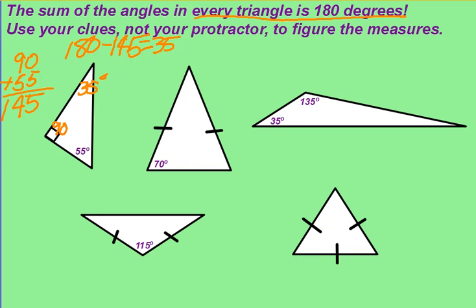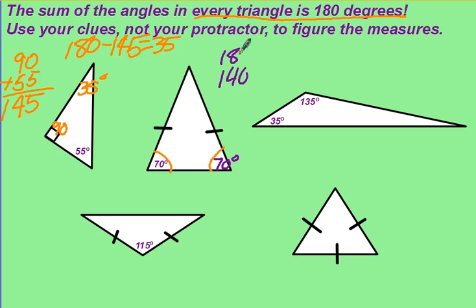This is an isosceles triangle, so we know that these angles will match. If this one is 70 degrees, then we know that this one also has to be 70 degrees. 70 plus 70 is 140. Subtract that from 180 — since every triangle's angles sum to 180 — so we know that the missing angle has to be 40 degrees.